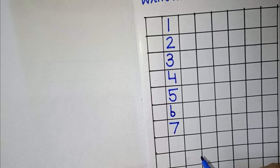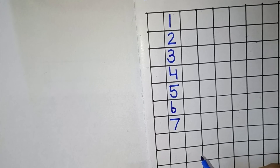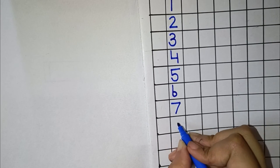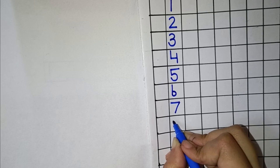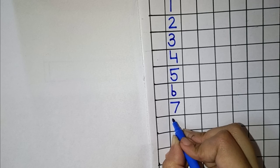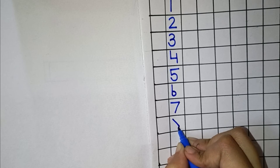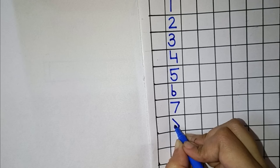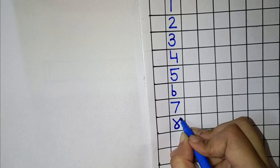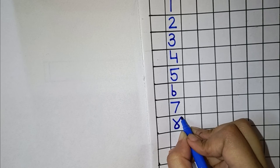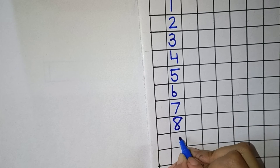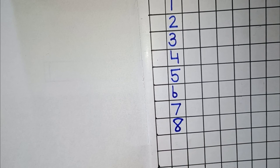Now the next number is 8. So for number 8, we will draw a left slanting line, an upward curve, a right slanting line, and a downward curve. This makes number 8.